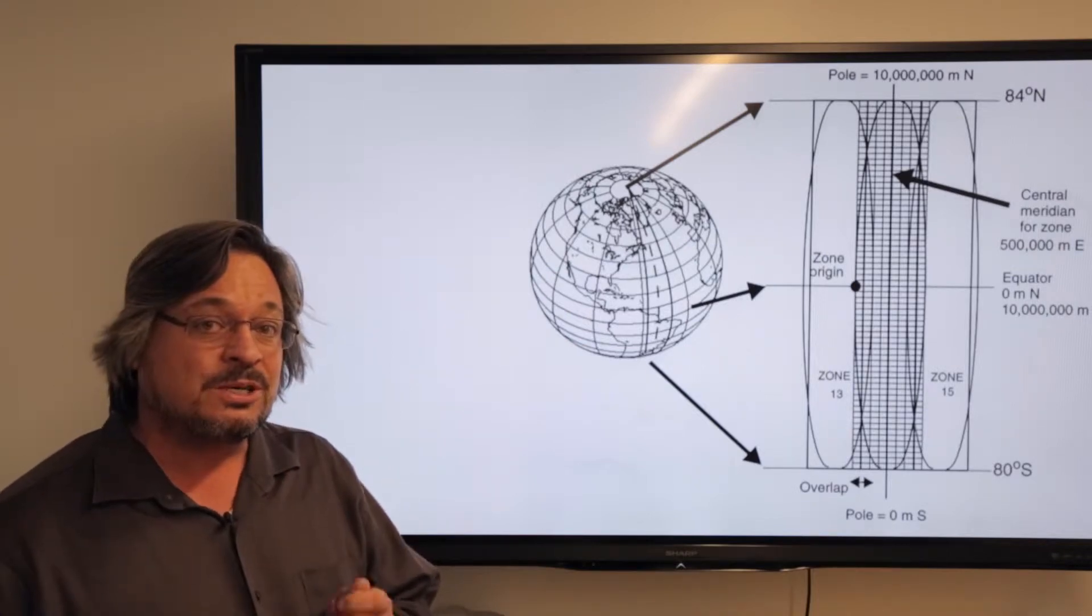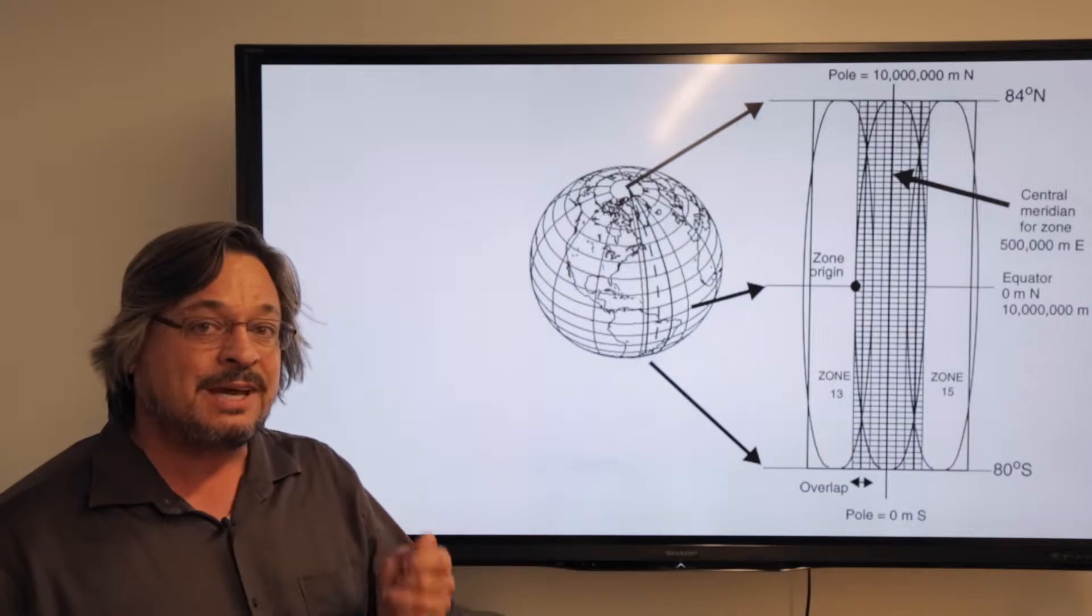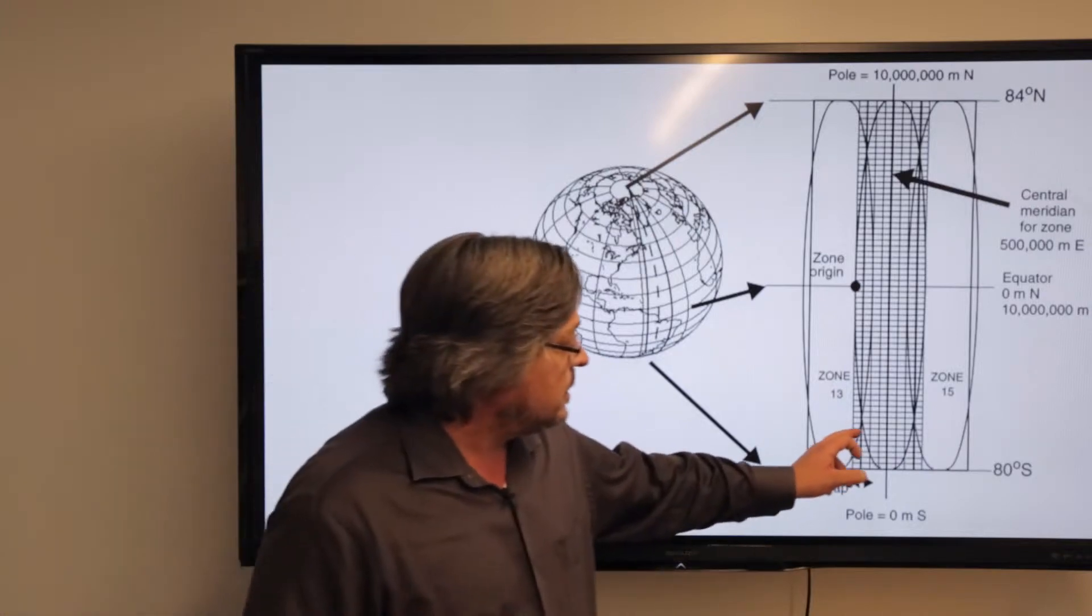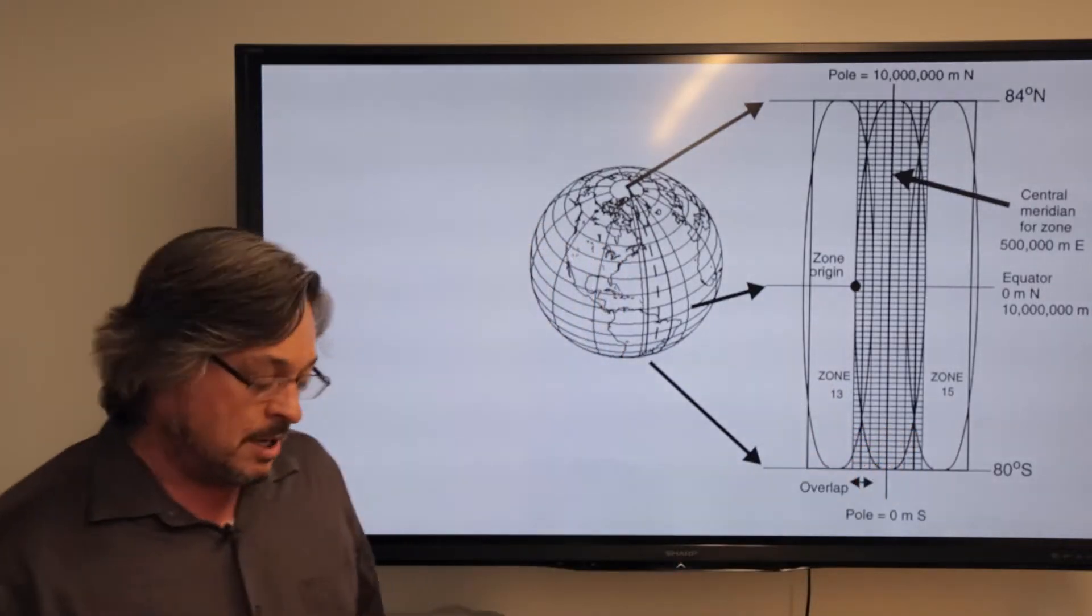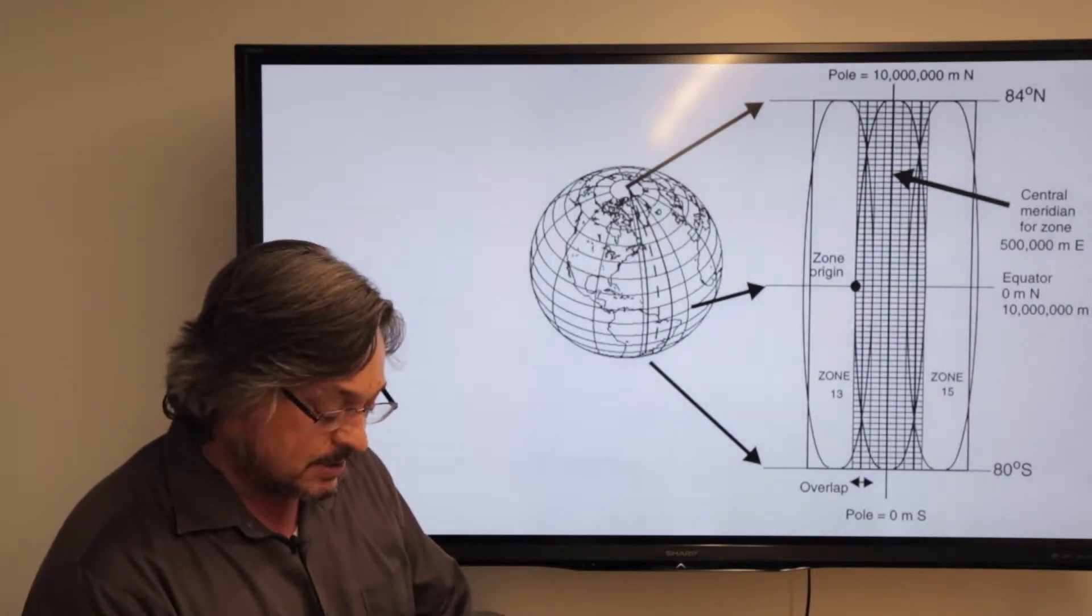The standard lines are really cool because they preserve scale there, so you get minimal amount of distortion as you move throughout a zone.